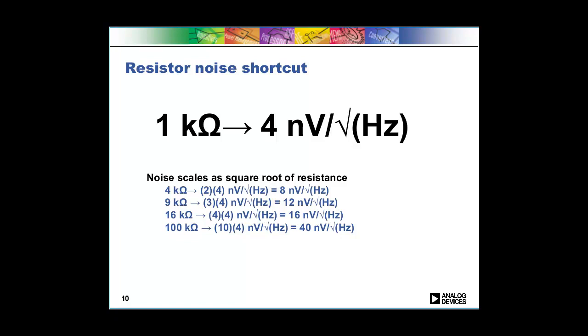The reason that this little relationship is nice, this 1 kiloohm equals 4 nanovolts per root hertz, is because it scales for other resistors. So let's say you have a 9 kiloohm resistor. What you do is just take the square root of the resistance in kiloohms. You would take square root of 9 is 3, and then multiply it by this 4 nanovolts per root hertz. And so you get 12 nanovolts per root hertz is the noise of that 9 kiloohm resistor. That works for any resistance you like.